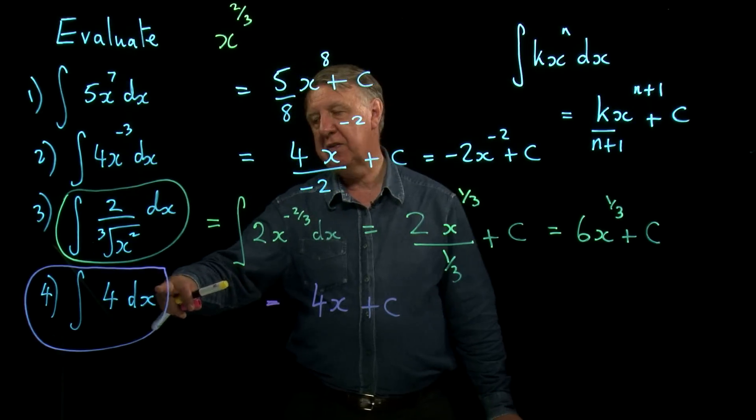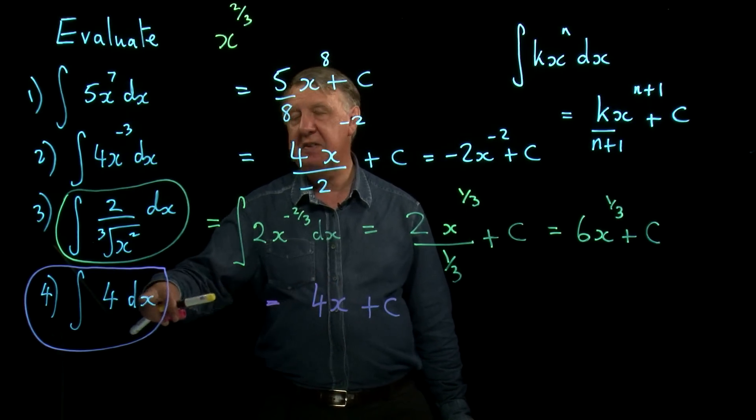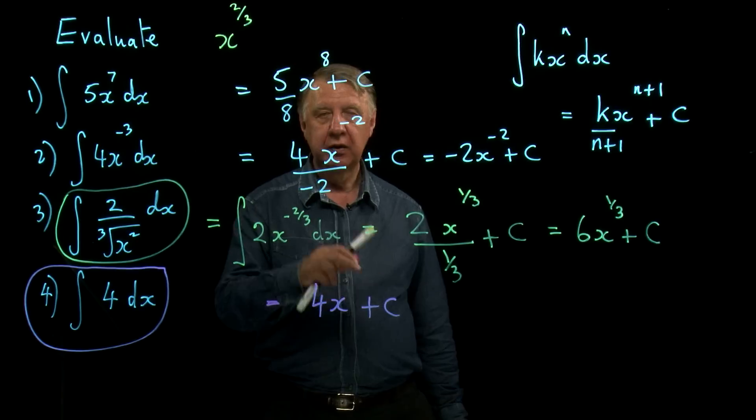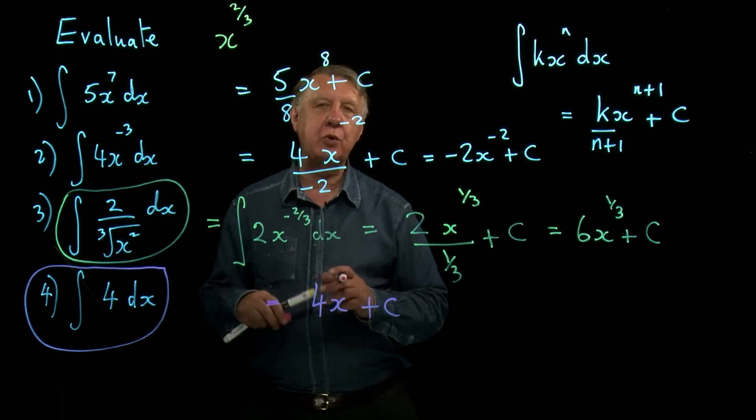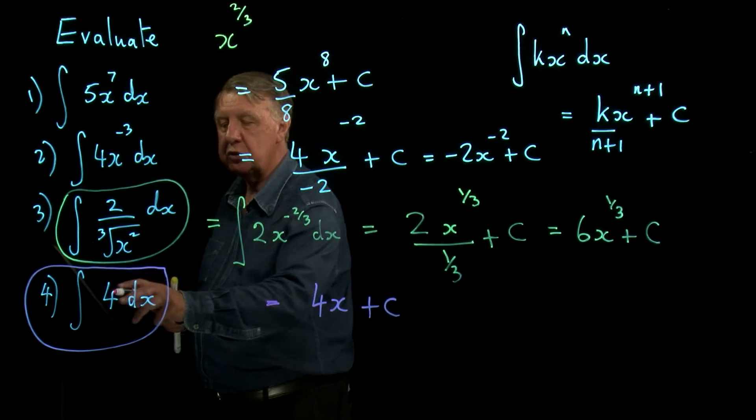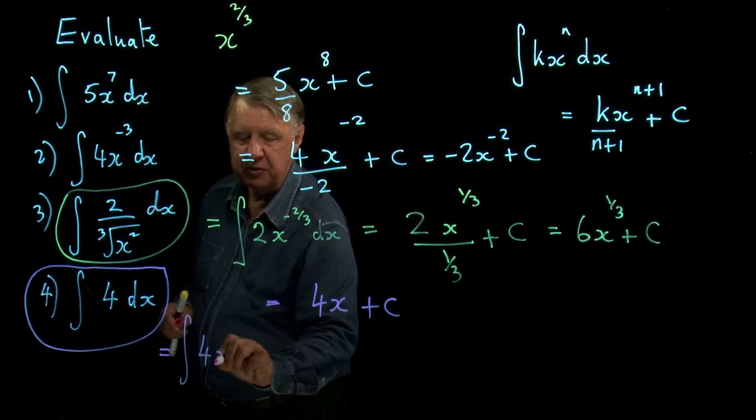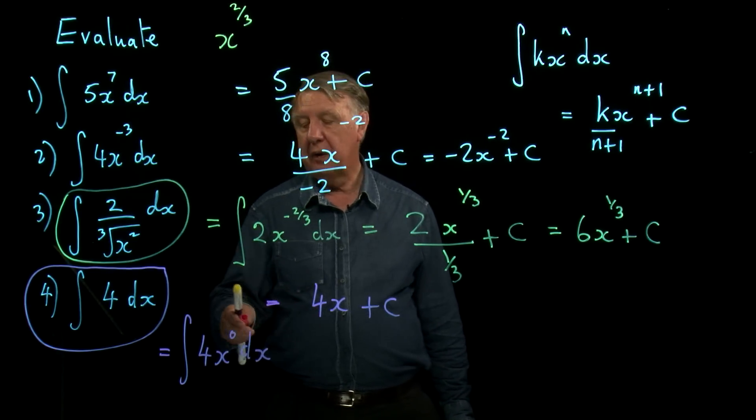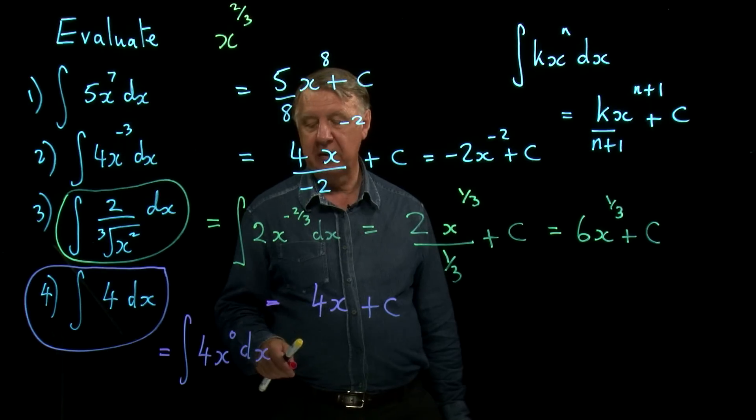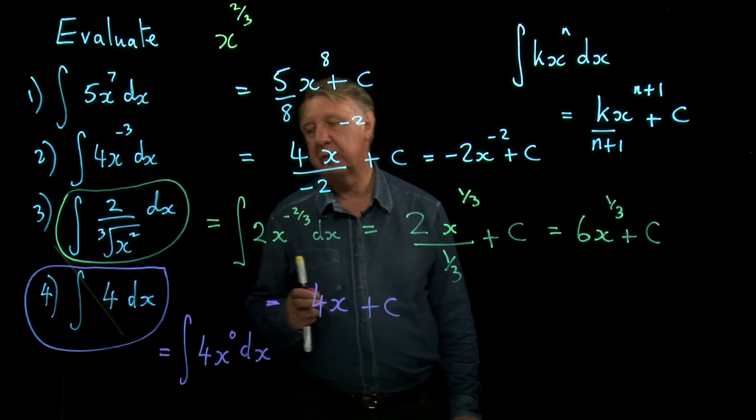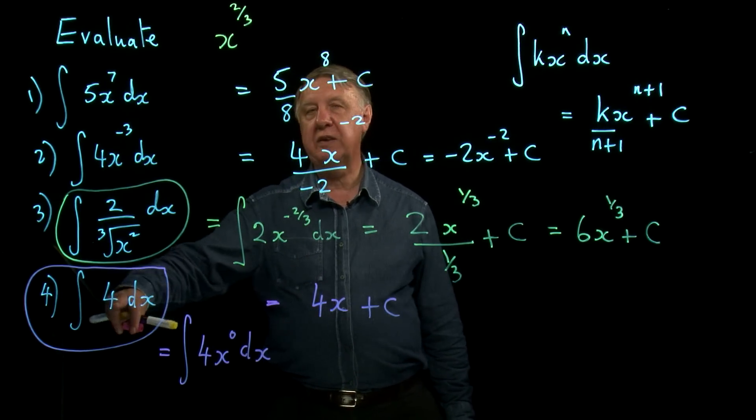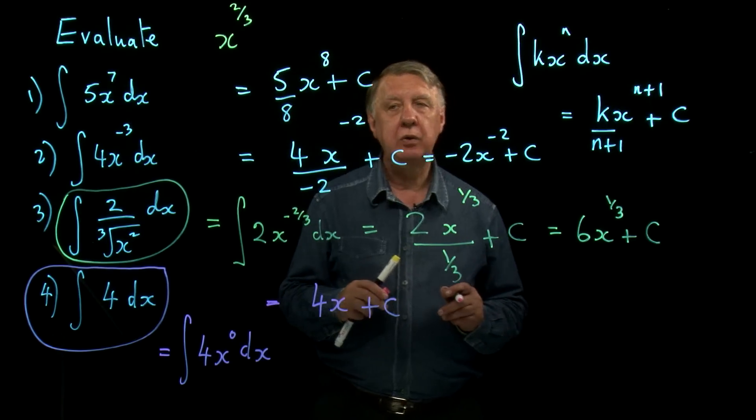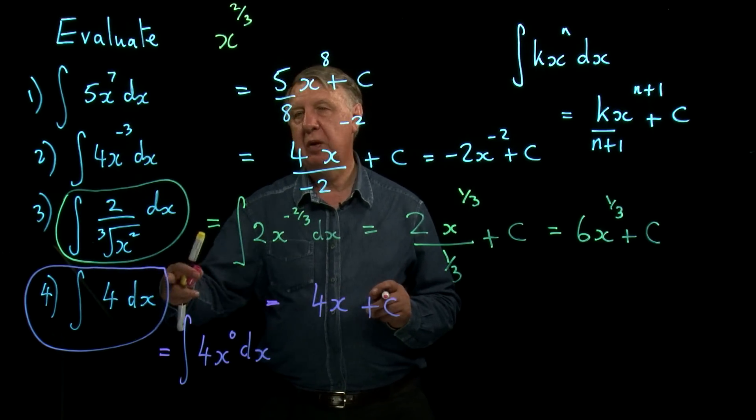So without that dx there I wouldn't know that it was 4x. In fact if it was d something else, if that was dy then it would be 4y. If it was dt it would be 4t. Does this actually fit into this rule over here? Well it does because of course I could write 4 as 4 times x to the 0, because remember that anything to the power 0 is 1. And then I can use the rule because if I add 1 to 0 I get 4x to the 1 divide by 1 gives me 4x. So you have to be very careful then if you're integrating a number that unless you've written the d whatever here you don't know what the answer is. So it is actually a crucial part of the symbolism that we use to do this integration.